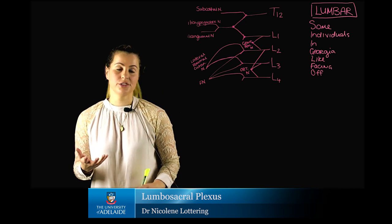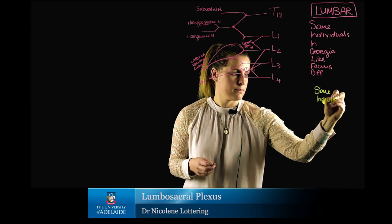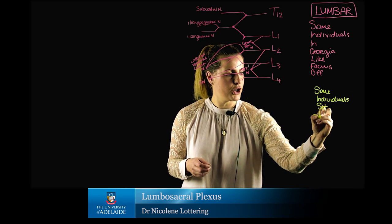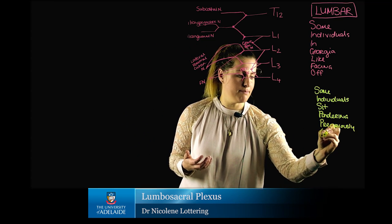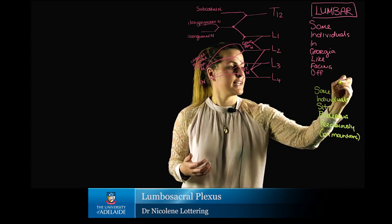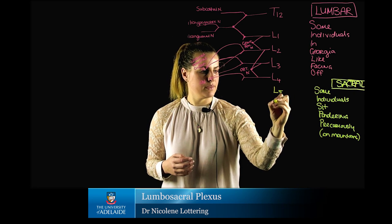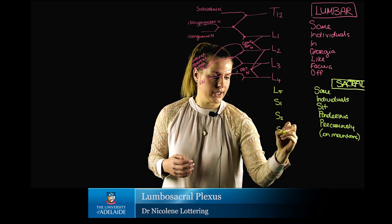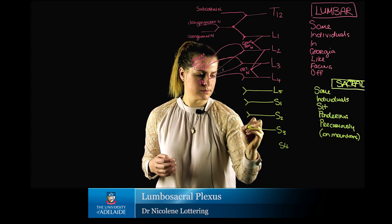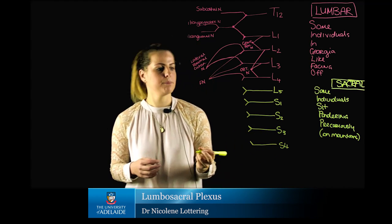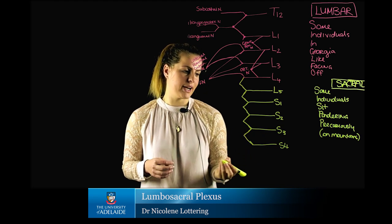The mnemonic we use to remember the sacral plexus is 'some individuals sit pondering precariously on mountains.' If we draw this out, continuing down from L5, S1, S2, S3, and S4, we draw in both the ventral and dorsal rami. For S4 we only draw the superior rami, and we only link the ventral rami of S4 with S3.